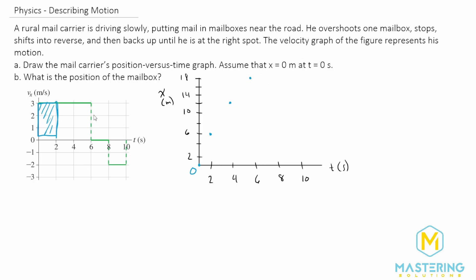Now when we look at the graph, it jumps down to zero meters per second, meaning the object is standing still, because this is the velocity versus time graph. So the velocity is zero, and from six to eight seconds, it stays in the exact same spot — 18 meters.